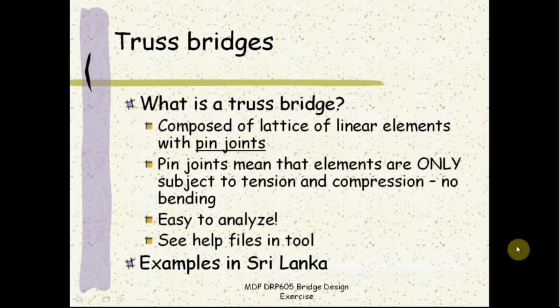Now, what is a truss bridge? We will see some examples in a little while and also discuss in great detail the components of a truss bridge when we look at the software. A truss bridge is composed of a lattice of linear elements, which means it is a little bit like a spider web. The most important thing about truss bridges is that they have pin joints — they are connected together in a way in which they can actually rotate about each other.